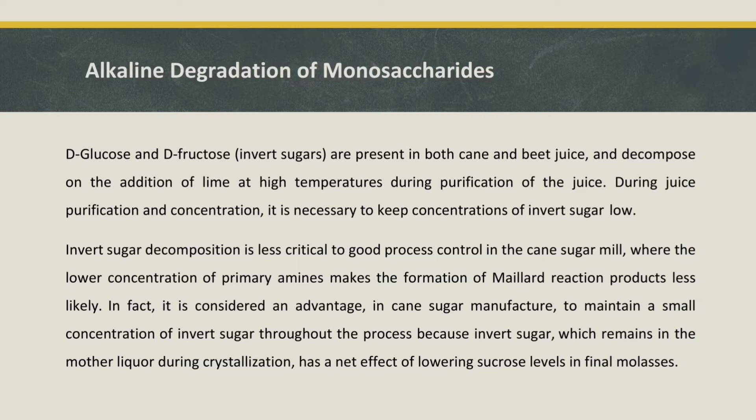Alkaline degradation of monosaccharides — D-glucose and D-fructose, also called invert sugars — are present in both cane and beet juice and decompose on the addition of lime at high temperatures during purification of the juice. During juice purification and concentration, it is necessary to keep concentrations of invert sugar low.